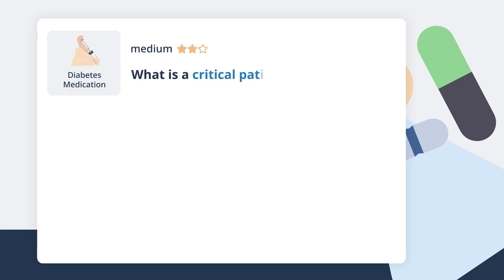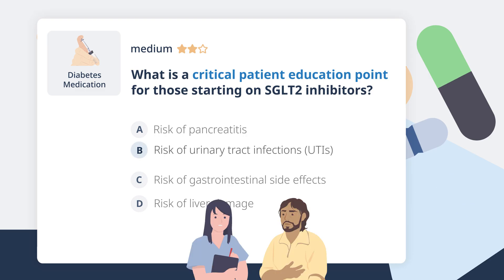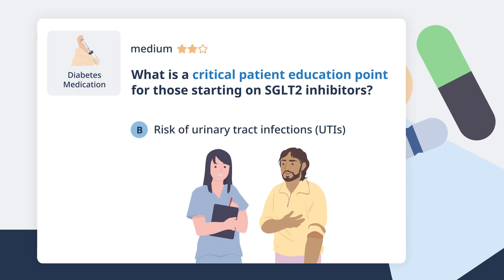What is a critical patient education point for those starting on SGLT2 inhibitors? SGLT2 inhibitors work by increasing glucose excretion in the urine, which can create a favorable environment for bacterial growth, raising the risk of urinary tract infections. It's important for patients to be educated about the signs of UTIs and to stay hydrated to help prevent them.